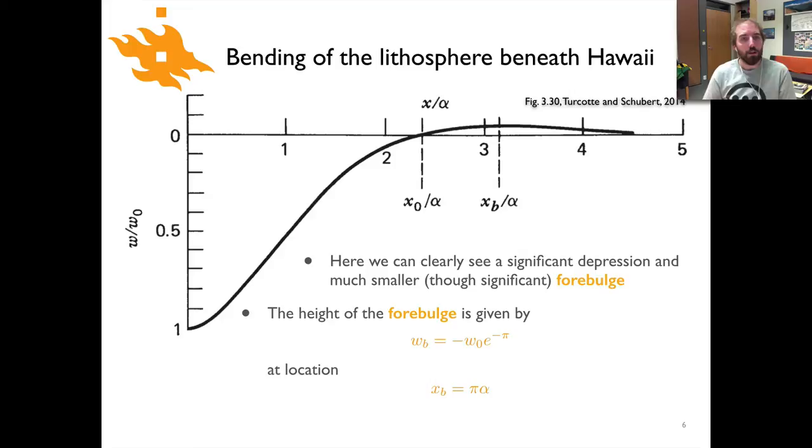So what does it look like? Well if you plug in some numbers here, some alphas and w naughts and things like that, this is what you see for your deflection of a solid elastic plate. And so here at the position x equals 0 is where our load is applied and so the amount of deflection here is greatest in terms of w divided by w naught. You can see that the deflection here is equal to 1 of course, that's where the deflection w is equal to w naught, the maximum.